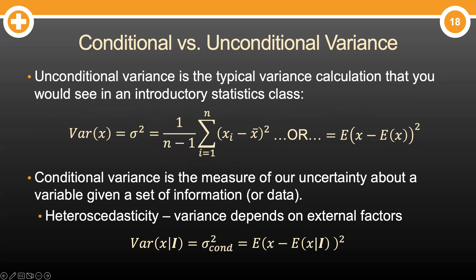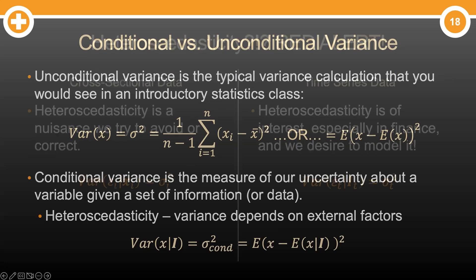However, we also have another kind of variance called conditional variance. This is the kind of variance that changes its value based on pieces of information or data. Typically, we say this kind of data exhibits heteroscedasticity — basically just a fancy word for variance that changes.